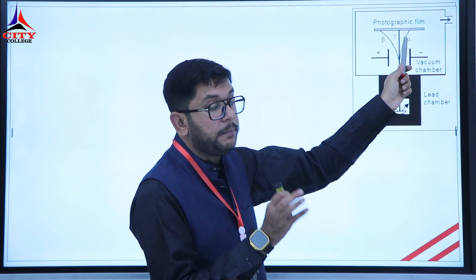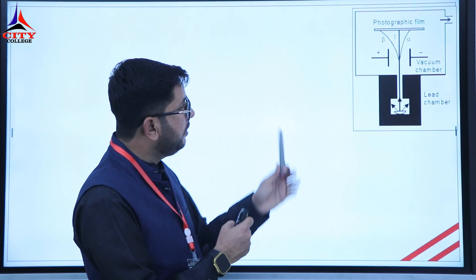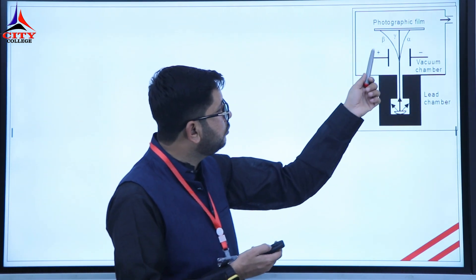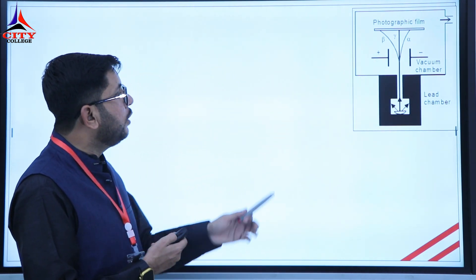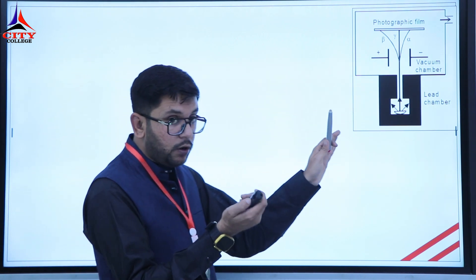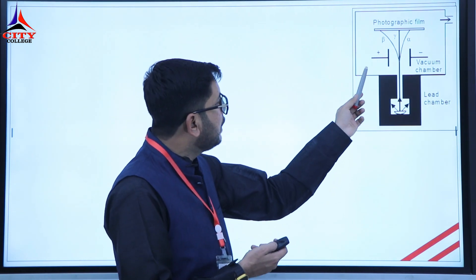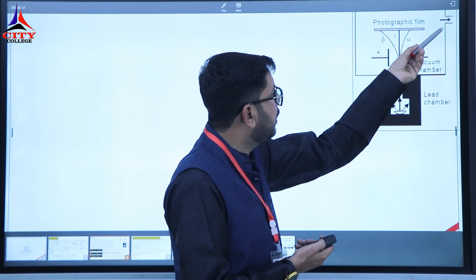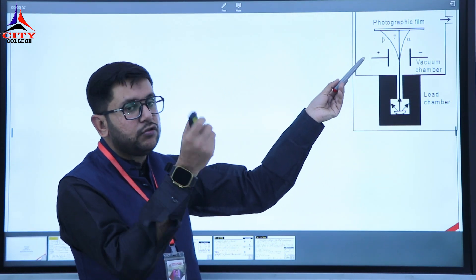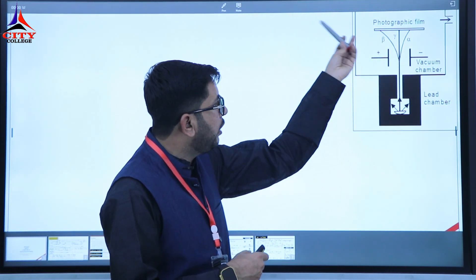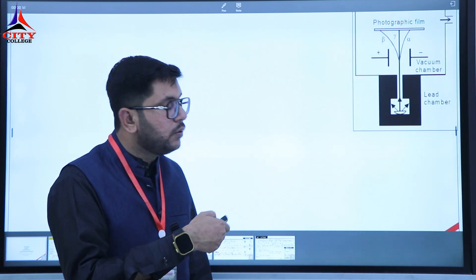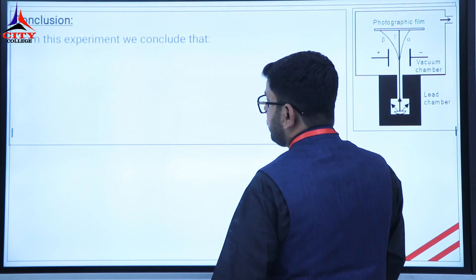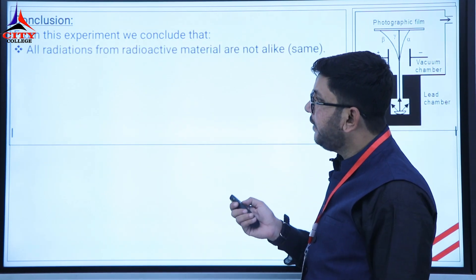Alpha and beta are particles: beta particles are fast-moving electrons, and alpha particles are helium nuclei. In the diagram, an important observation is that beta shows more bending, and alpha shows less bending. This indicates that beta particles are lighter, while alpha particles are heavier.